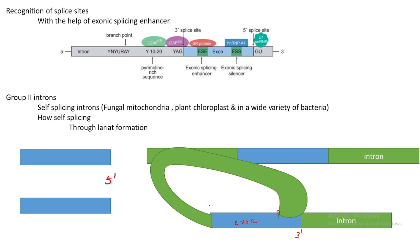After that, the 5' end of this intron also gets spliced out. Later, the intron is released from the mRNA. In this way, all other introns also separate, and the remaining exons get joined — ligated together — to form the mature mRNA.